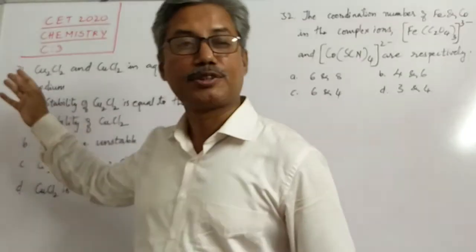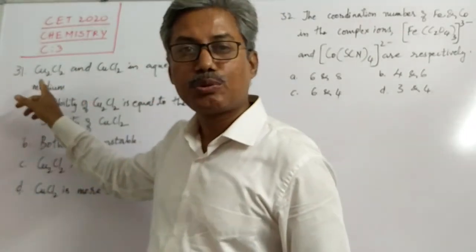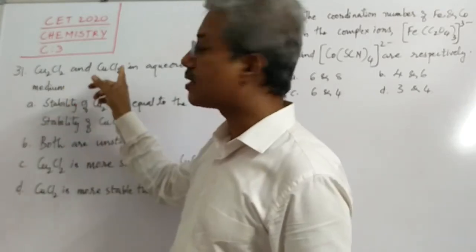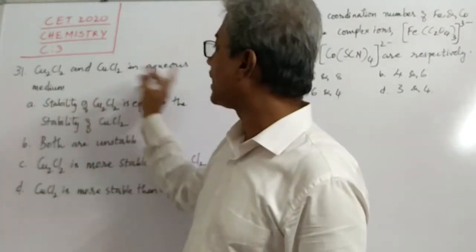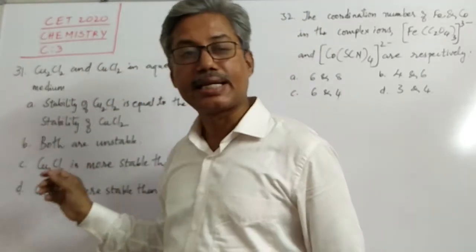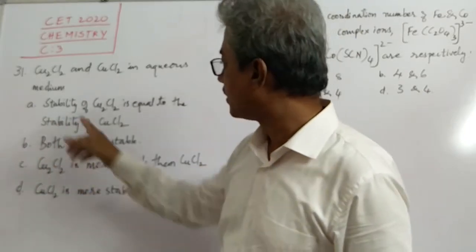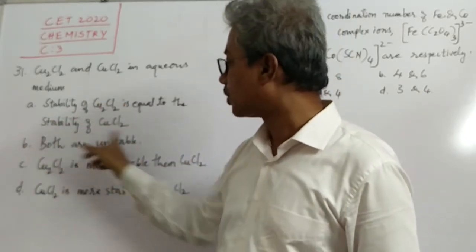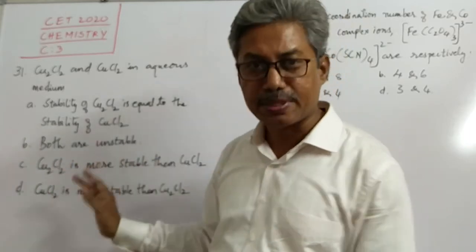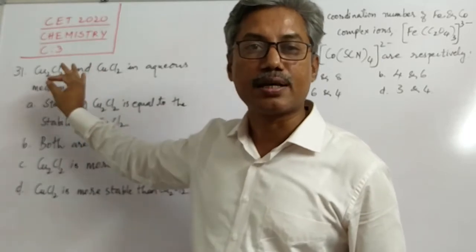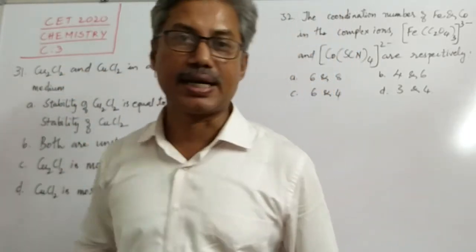Let us take up question number 31. It says: Cu₂Cl₂, that is cuprous chloride, and CuCl₂, that is cupric chloride, in aqueous medium. The choices ask which is more stable in aqueous medium — whether the stability of Cu₂Cl₂ equals that of CuCl₂, both are unstable, Cu₂Cl₂ is more stable than CuCl₂, or the reverse. To answer this, we need to consider stability.